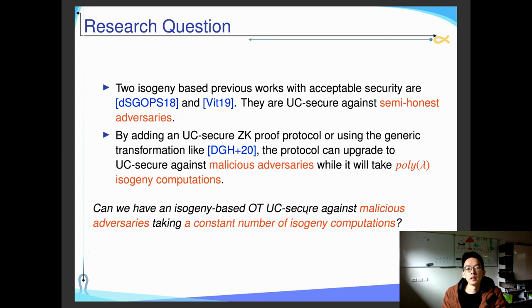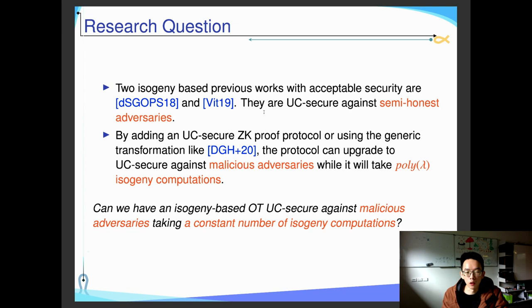There are two previous isogeny-based OT schemes, and they achieve UC security against semi-honest adversaries, which means that the adversary will follow the protocol execution but tries to learn more information from it. Based on this, by adding a UC security proof or using some generic transform, the protocol can be upgraded to UC security against malicious adversaries.